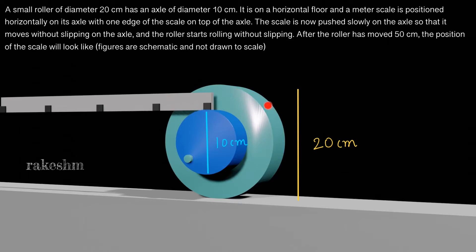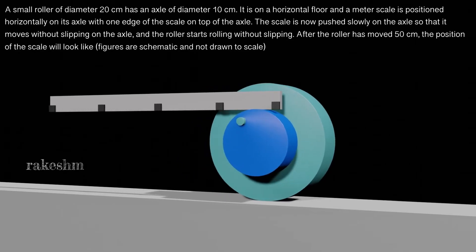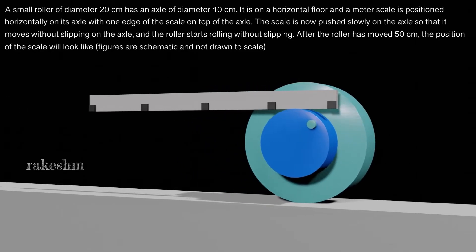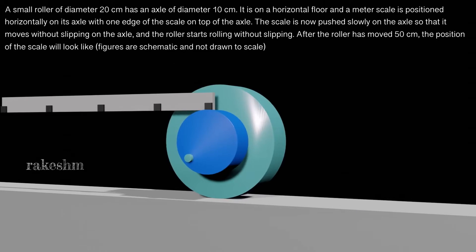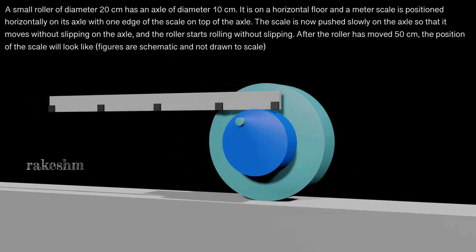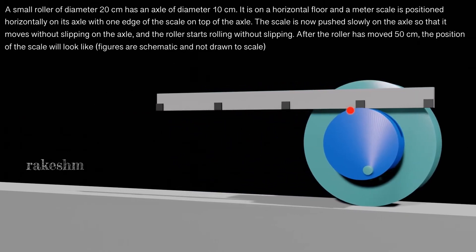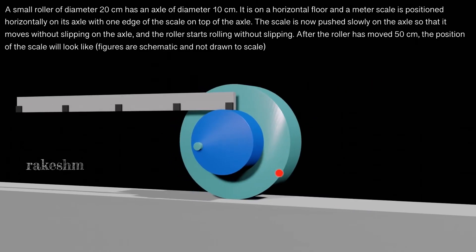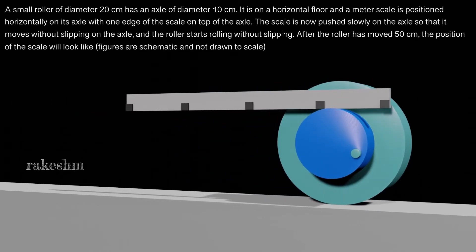You can see in the schematic that the scale is rolling on the axle without slipping, and the roller is also rolling on the ground without slipping.